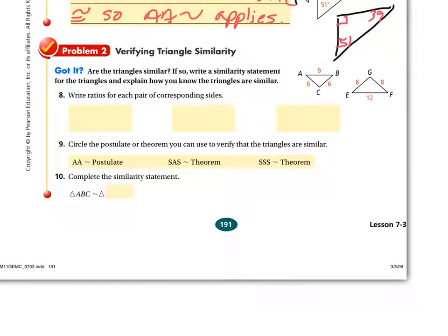Last problem today: problem 2, verifying triangle similarity again. Are the triangles similar? If so, write a similarity statement — triangle blah blah blah is similar to triangle blah blah blah — and explain how you know.